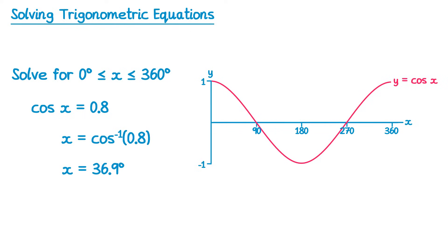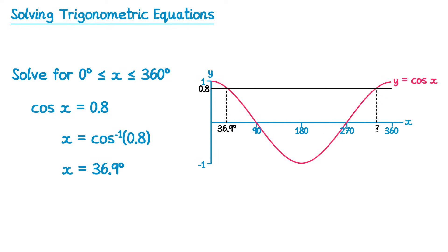Our equation was cos of x equals 0.8, so let's mark 0.8 on the y-axis and draw a horizontal line there. You can see there are two intersections. The first is the one we've already found — you can see it's between 0 and 90, so that's our 36.9 degrees. The question is what is the other solution on the right-hand side? To find it, we use the symmetry of the cos graph, which is symmetrical about 180 degrees — imagine a mirror line down the middle.